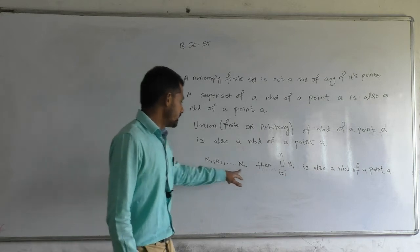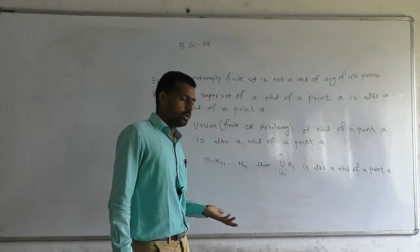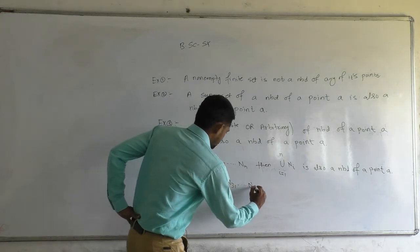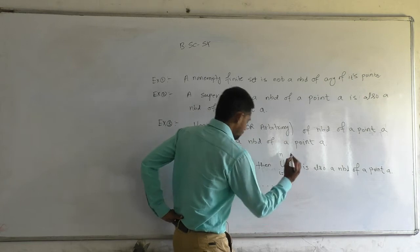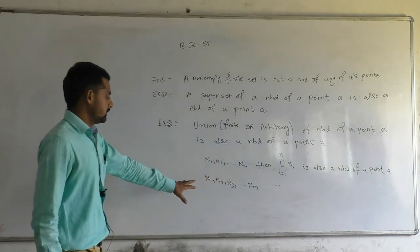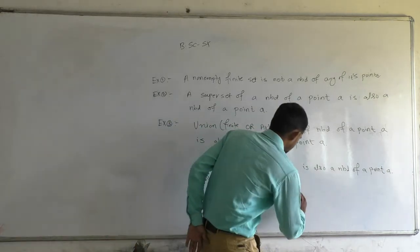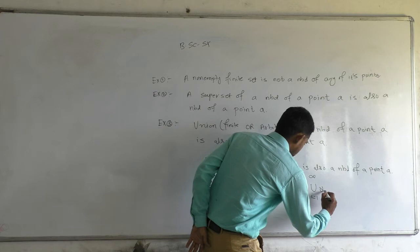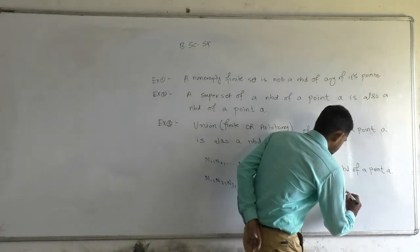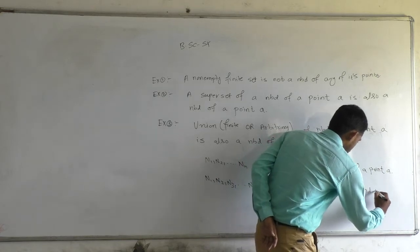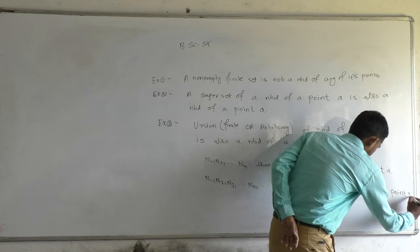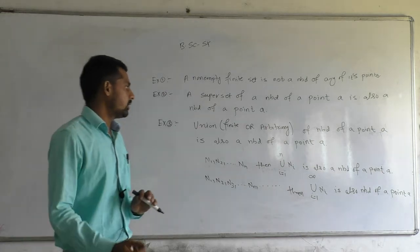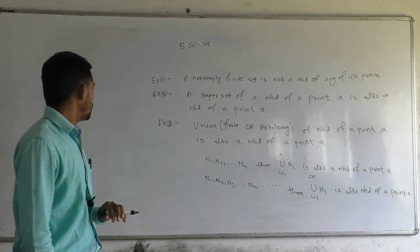Now if we extend this to the infinite case: if N1, N2, N3, ..., Nn, ... is an infinite collection of neighborhoods of point a, then the union of Ni for i running from 1 to infinity is also a neighborhood of point a. So example three shows that the union — whether finite or arbitrary — of neighborhoods of a point a is also a neighborhood of a.